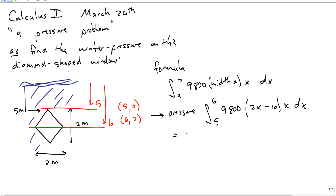So what is this? You bring the 9,800 out front. This becomes 9,800 times the integral of 2x squared minus 10x, going from 5 to 6.